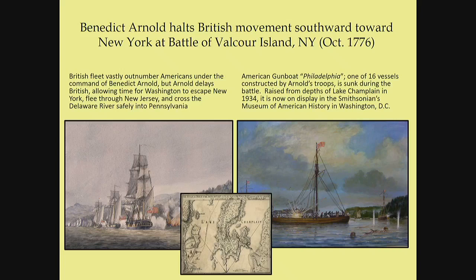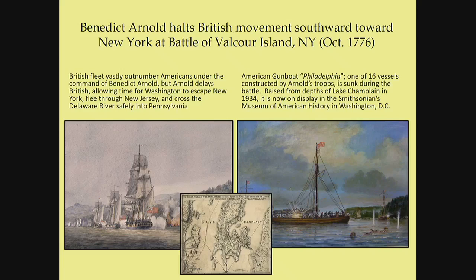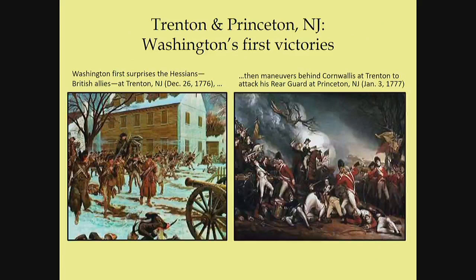The British were humiliated by the American victories at Trenton and Princeton and had to do something to smash this rebellion before it got out of hand. Since the first strategy of invading from Canada didn't work, they came up with another strategy: once again invade from Canada to divide the northern colonies, since most of the commotion was occurring in Massachusetts, New Jersey, and New York. They came up with a three-pronged strategy.